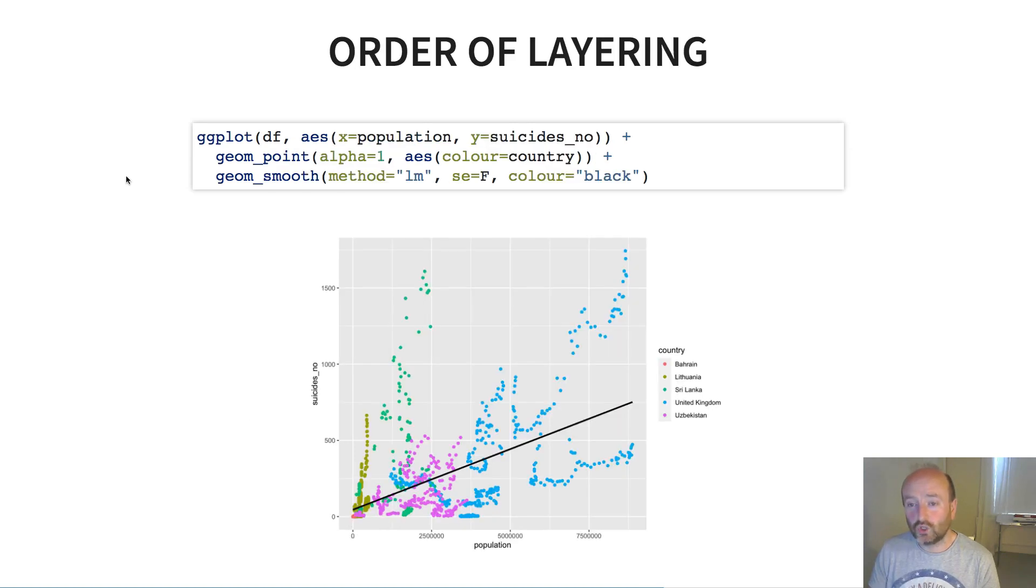Importantly, for some of the geoms, the order of layering actually matters. So here, what I've got is I've got geom_point, which is my first geom that I'm plotting, and then I've got geom_smooth. And because of that, remember that geom_point plots a scatter plot and geom_smooth produces a regression line. So here, because I plotted geom_smooth last, the regression line gets overlaid on top of the data. Whereas, if I reverse the order of those two things, then effectively what I get is I get a regression line which is underneath the data. And so for some geoms, that ordering matters.